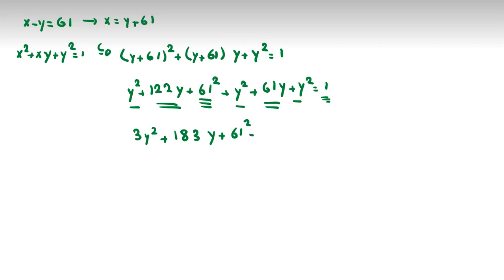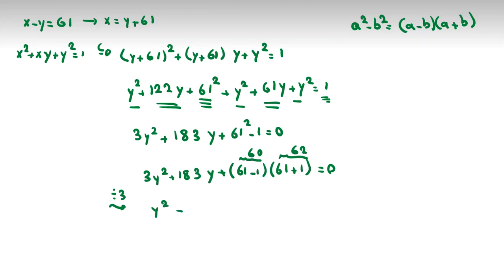Now you have the famous identity that a squared minus b squared is a minus b times a plus b. So I can say it is 3y squared plus 183y plus 61 minus 1 times 61 plus 1 equals 0. 61 minus 1 is 60, 61 plus 1 is 62. We divide both sides by 3: it will be y squared plus 61y plus 20 times 62, which is 0.